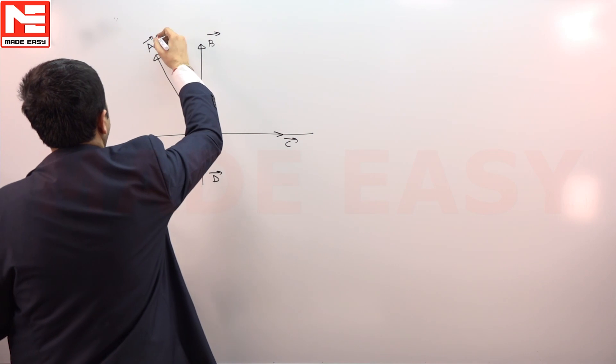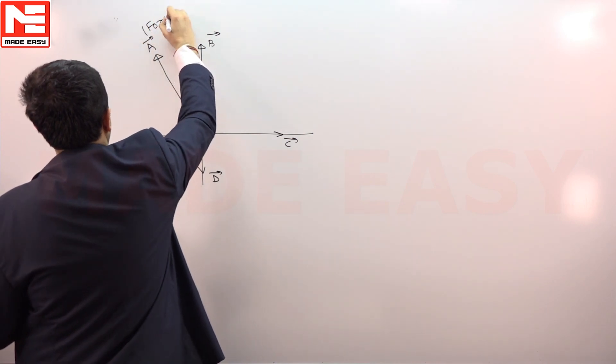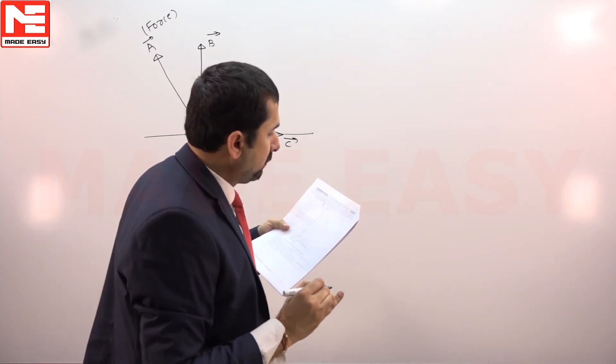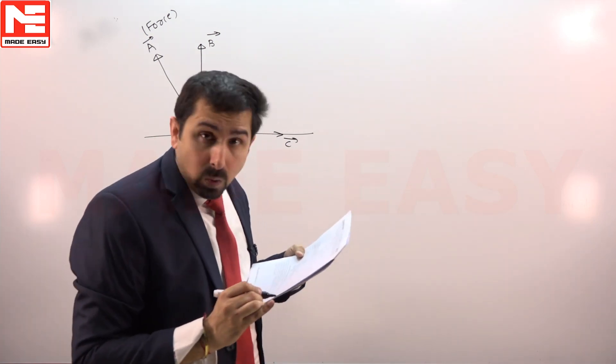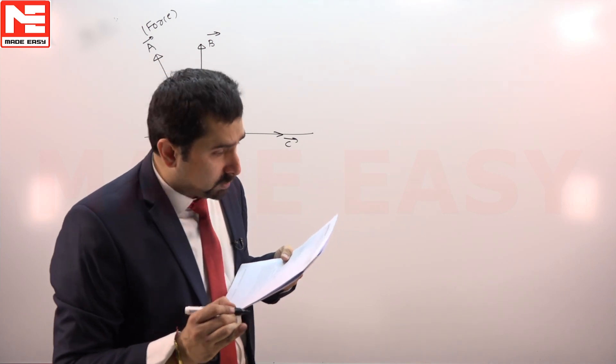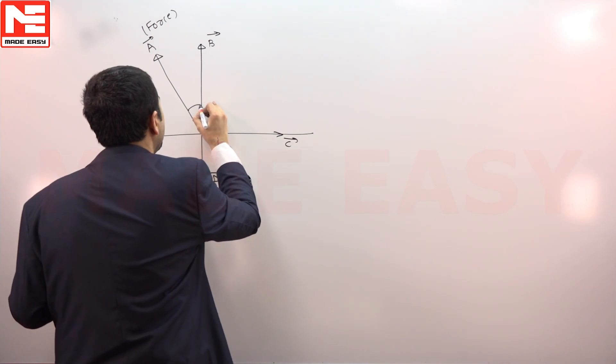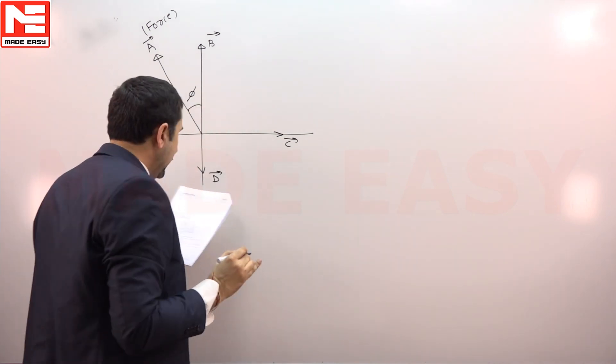Vector a is basically the force they are going to give you, and vector b represents y equals y sin omega t, that is basically displacement. And phi is the phase angle between them.